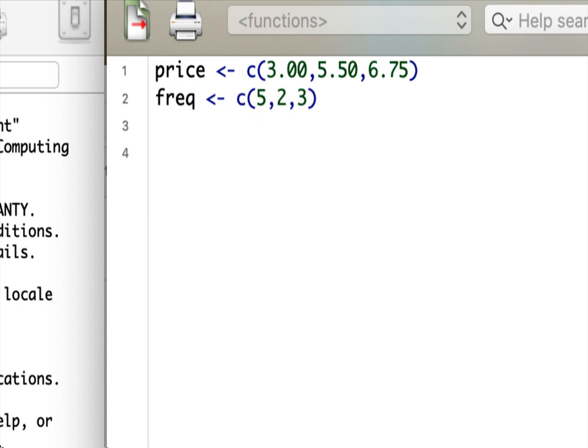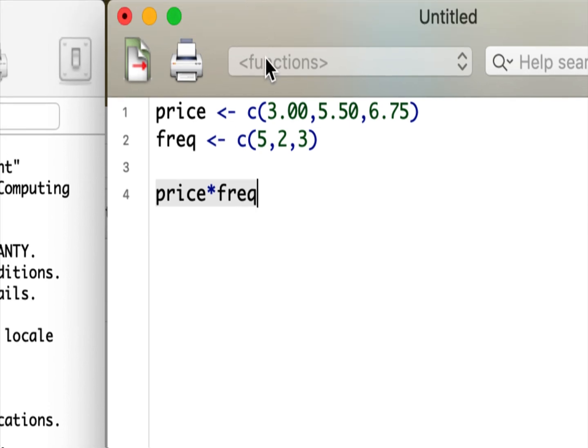So finding the weighted mean is actually not that tricky. We just sum up the products of the price and the frequency, and R makes this easy. If I will just say price times frequency, it will multiply corresponding elements.